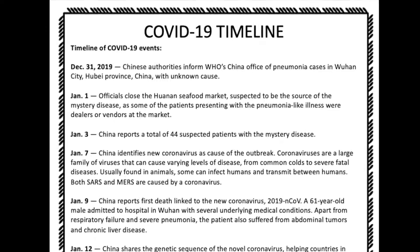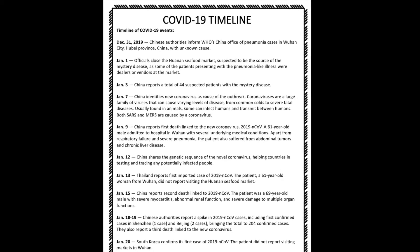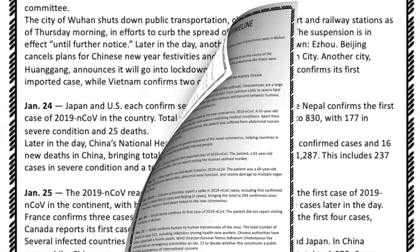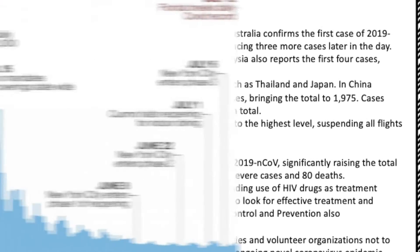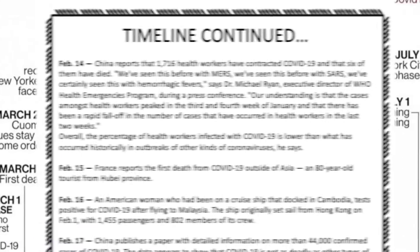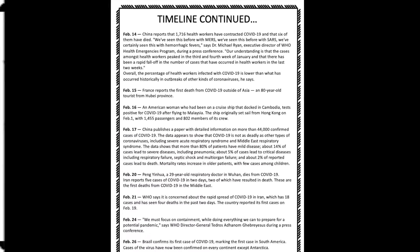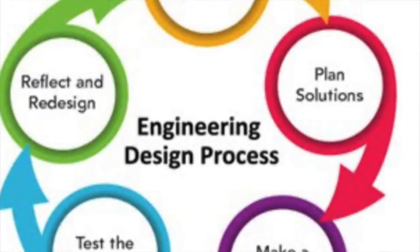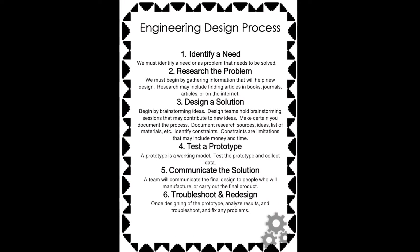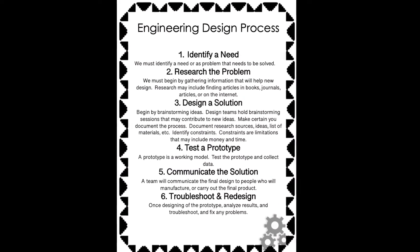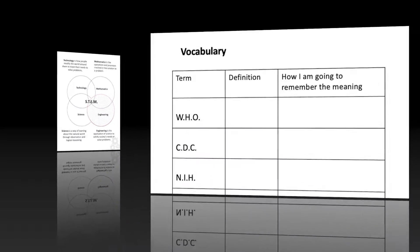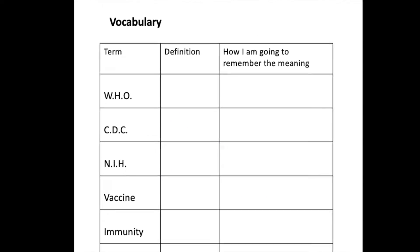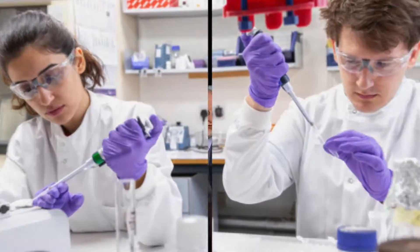We actually have a timeline that starts December 31st of 2019, all the way up until current times. The kids can take a look at the timeline, review what our government has done, take a look at the engineering and design process. We explain STEM, and we have a vocabulary list that they can actually fill out.